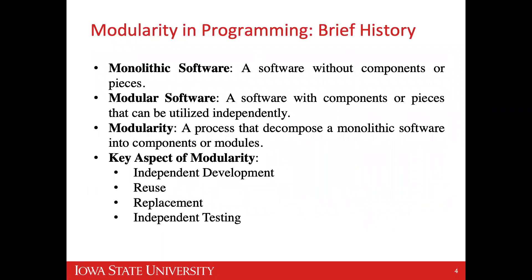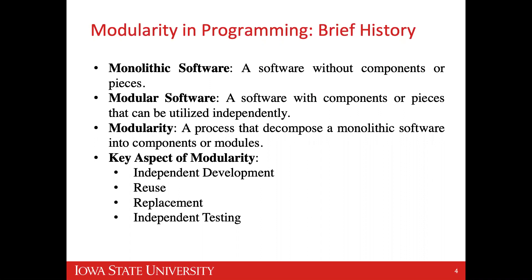Now I'll dive directly into the paper. First, let's talk about what monolithic software is. Monolithic software is a software that is a single entity without any components or pieces. Modular software is when the software is divided into components or pieces that can be utilized independently. Modularity is the process that decomposes a monolithic model into components or modules. Key benefits include independent development, reusability, and independent testing.